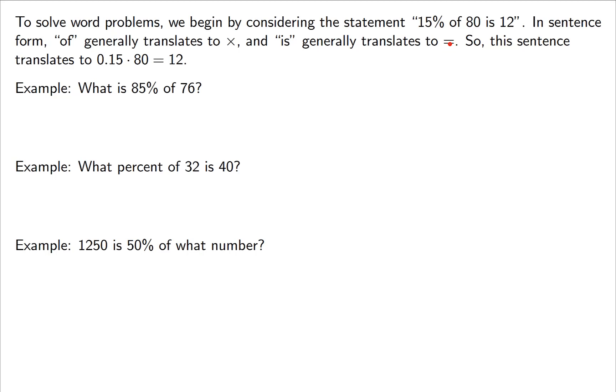Anytime you run into the word what, or some sort of question, that's generally going to turn to your variable. In the first example, what is my variable, is turns to equals, 85%. Anytime I run into a percent, I'm going to turn it into a decimal 0.85, of turns into multiplication. And I'm going to use the dot. I don't want any confusion of x versus times. So of and then 76. And then from here, all I have to do is multiply it out. And I get 64.6.